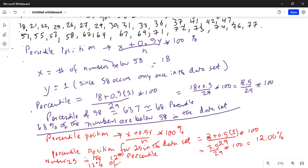Again, what does it mean? 12th percentile - 12 percent of the numbers are below 25 in the data set. That's what is the meaning of 12th percentile. So 25 is in the 12th percentile.